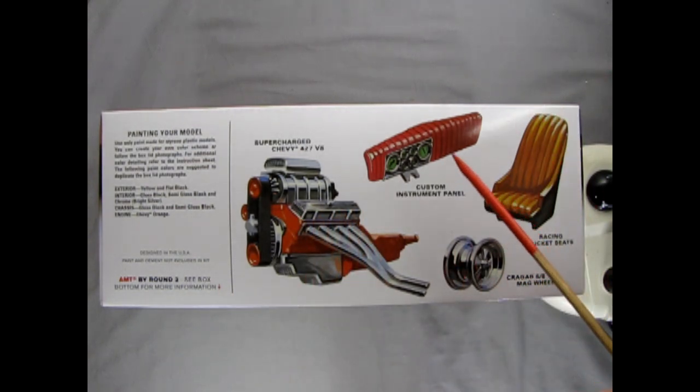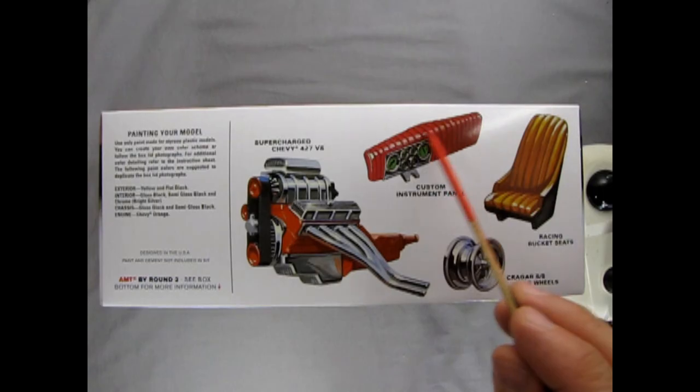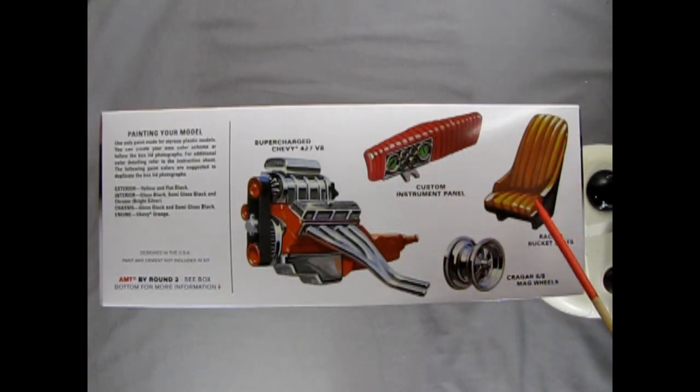Now here we have a tuck and roll custom instrument panel and dashboard. The panel isn't tuck and rolled but the dashboard is. And then we've got the matching tuck and roll racing bucket seats and these wonderful Krager SS mag wheels.